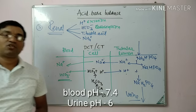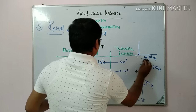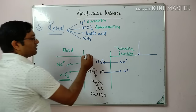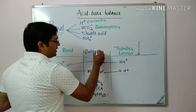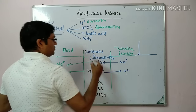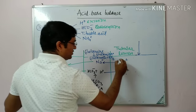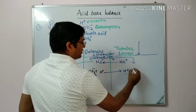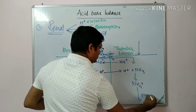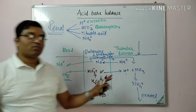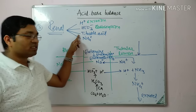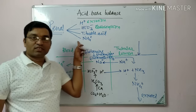The fourth mechanism is excretion of ammonium ions in the distal convoluted tubule or collecting duct. Glutamine in the tubular cells is converted to glutamate and NH₃ via glutaminase. This NH₃ enters the tubular lumen, combines with H⁺ ions to form ammonium ions (NH₄⁺), and is excreted in the urine.